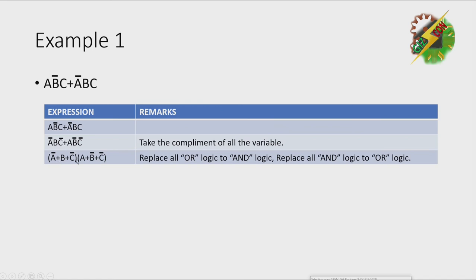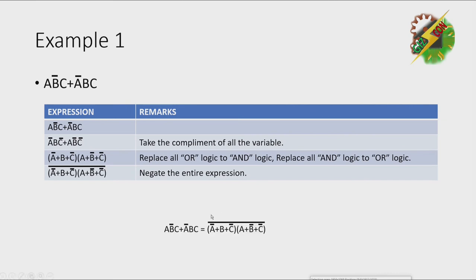And the last step negate the entire expression. As the DeMorgan's theorem says, these two equations are equivalent. You can use a truth table to prove that these two equations are the same, but according to DeMorgan's theorem this equation and this equation are the same.